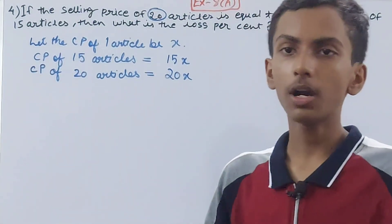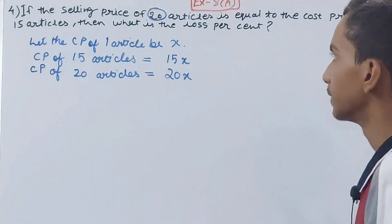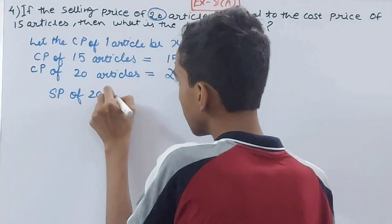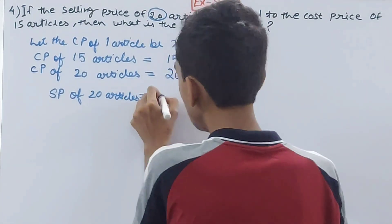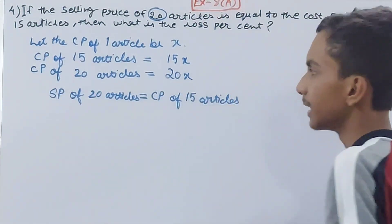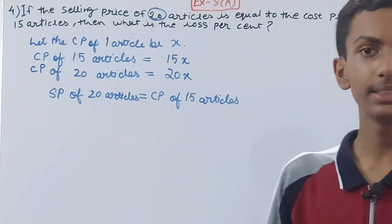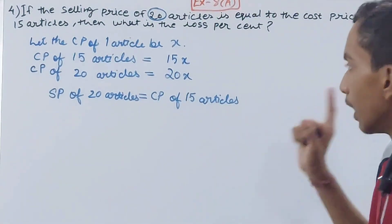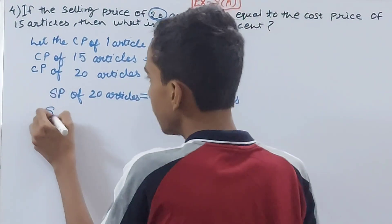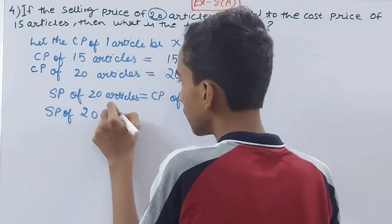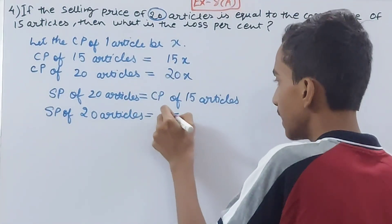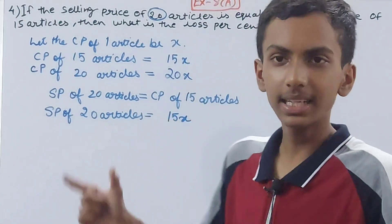This will come for our use in the later part of the question. So according to the question, the SP of 20 articles is equal to the CP of 15 articles. The selling price of 20 articles is equal to the cost price of 15 articles. We know cost price of 15 articles is 15x, so selling price of 20 articles is equal to 15x.